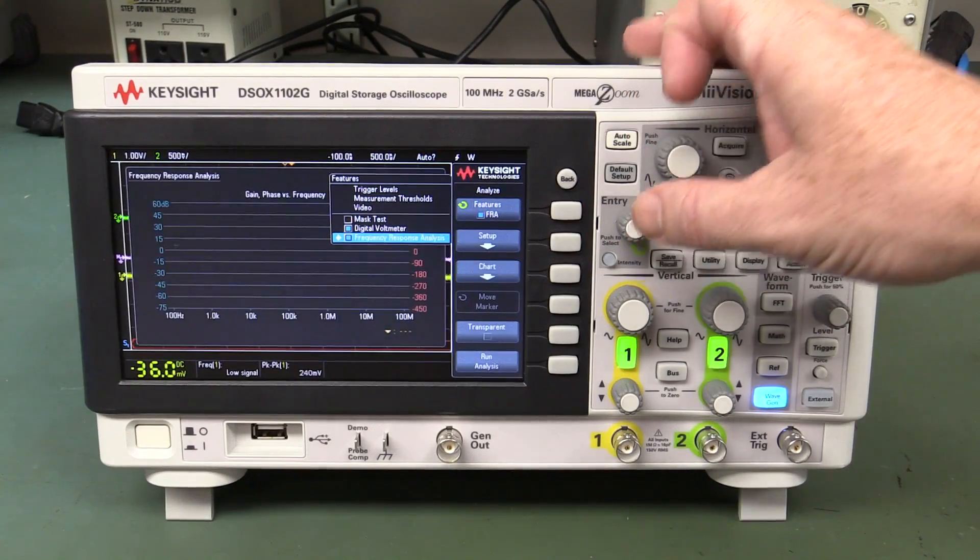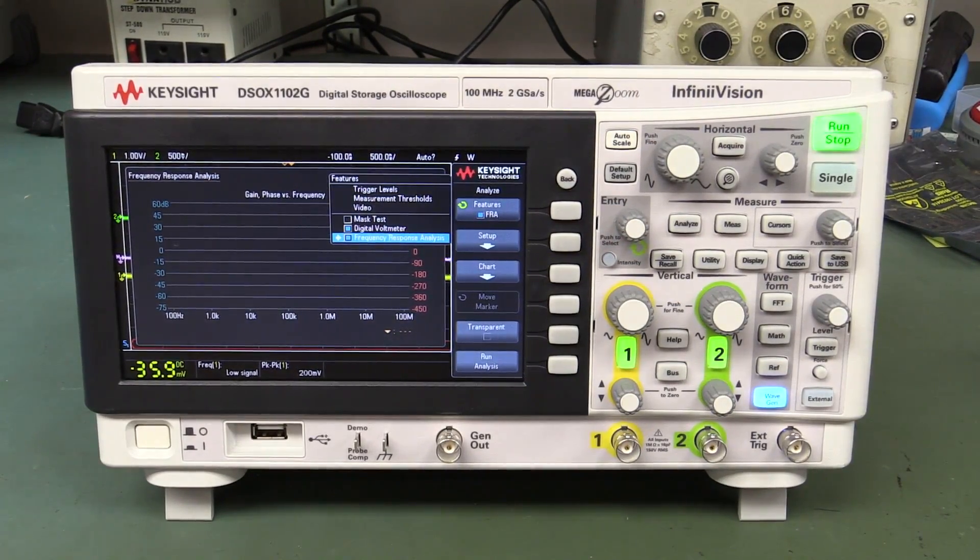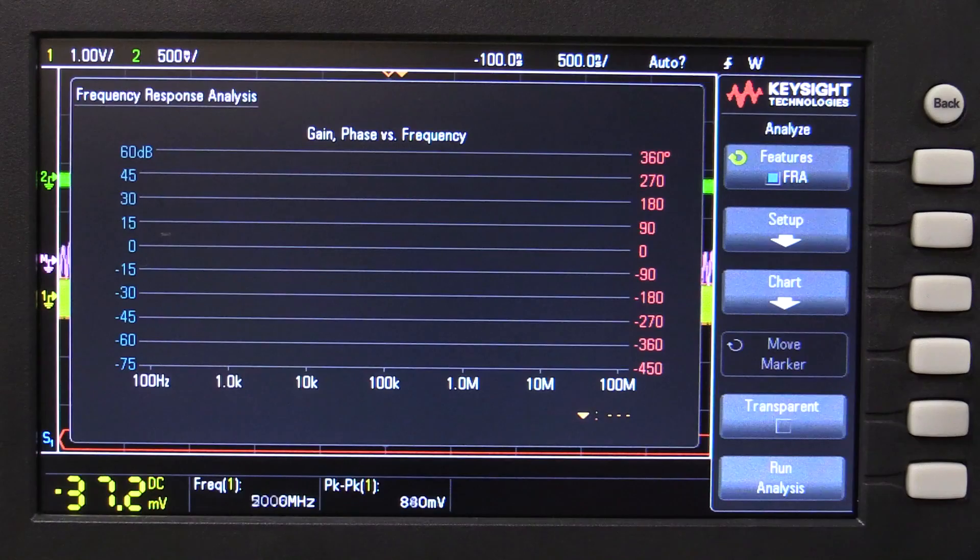Whoa. Wow. We've got ourselves bode plot functionality. Gain and phase versus frequency. It looks identical to the one that they offer in the power supply analysis option in the high-end 3000X and higher scopes. It looks like they've actually just cut the code out of that and whacked it straight in this little like baby bottom end unit. Fantastic.